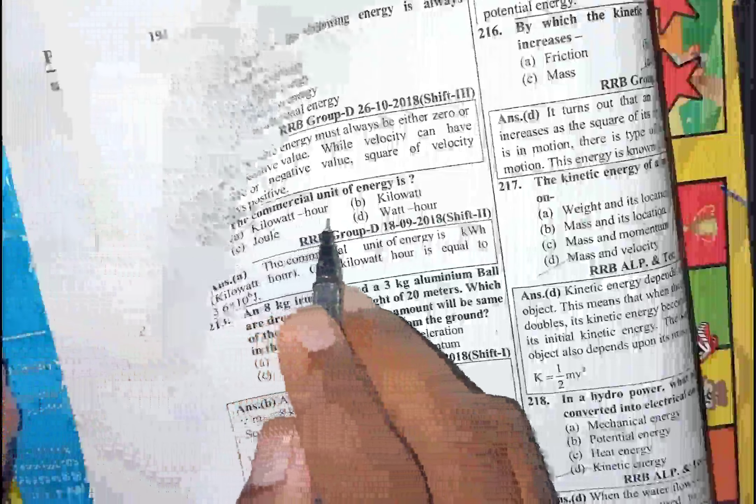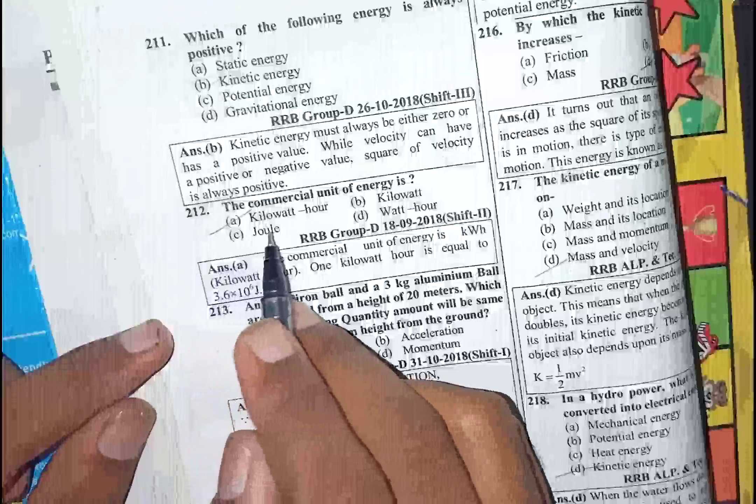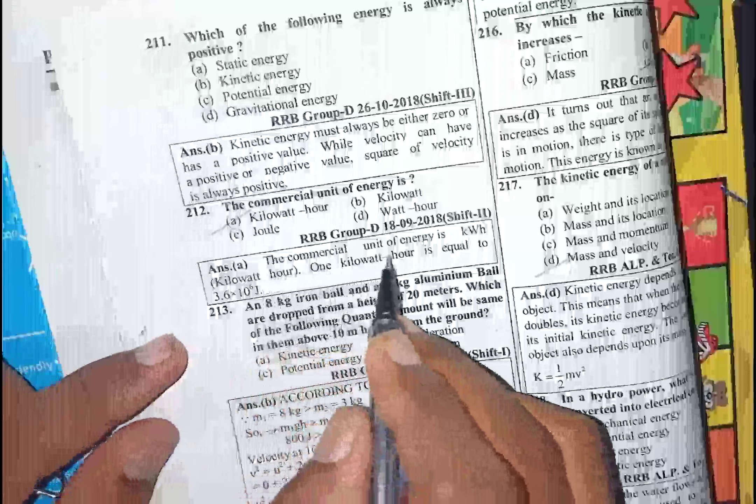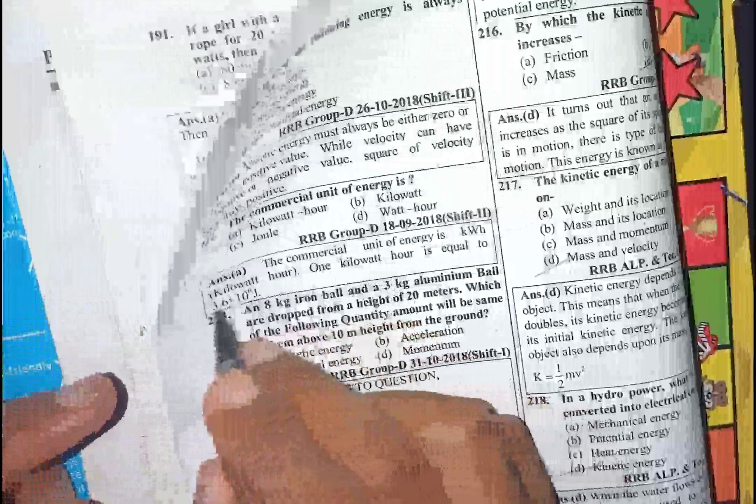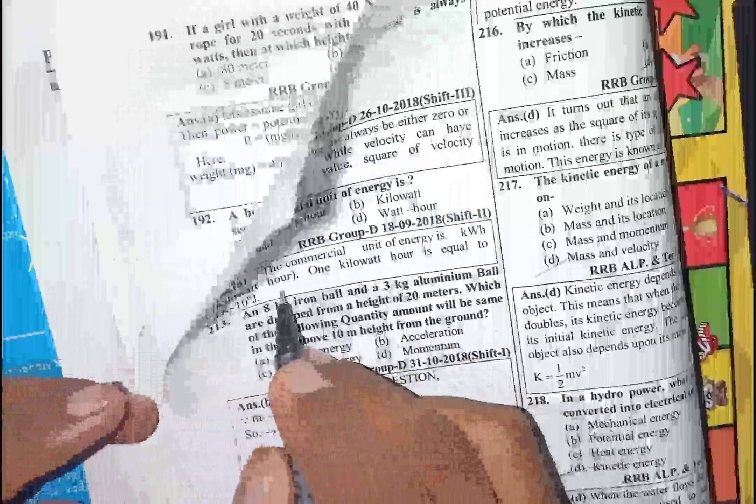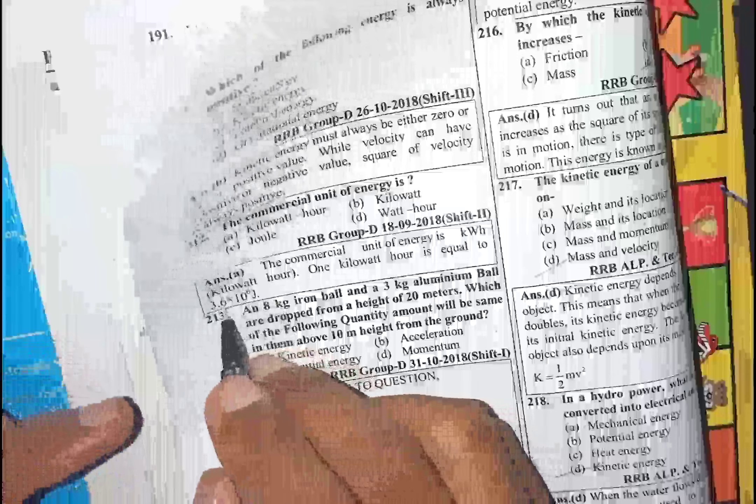Next question: the commercial unit of energy is kilowatt hour. One kilowatt hour equals 3.6 × 10^6 joules.